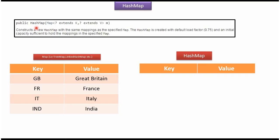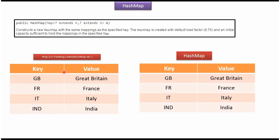This is the fourth HashMap constructor which accepts a map. The map can be a TreeMap or LinkedHashMap etc. This map has four key-value pairs where the key is country code and the value is country. If you pass this map to this HashMap constructor, it will construct a new HashMap containing all key-value pairs from that map.